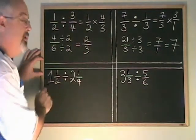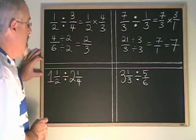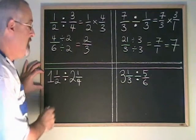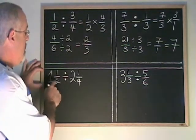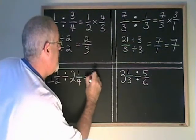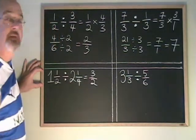Here we have two mixed numbers. So the first thing I'm going to do is convert the mixed numbers into improper fractions because that makes the division easier. 1 times 2 is 2 plus 1 is 3. So this becomes 3 halves. 1 and a half is equivalent to 3 halves.